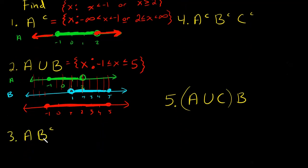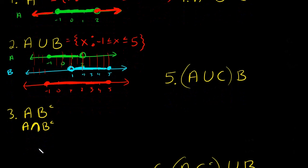Next: A intersect B complement. You could also write this with the intersection sign explicitly. A lot of times people drop the intersection symbol — when you see two sets next to each other it's assumed to mean intersection. So this is A and B complement: X must be in both A and B complement. Let's recall — A goes from negative 1 (including negative 1) through 0, 1, and up to 2.